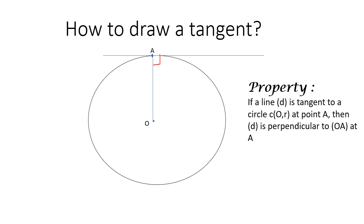Property: If a line d is tangent to a circle at point A, then d is perpendicular to OA.